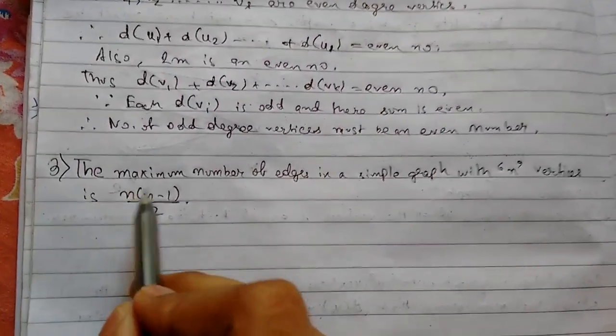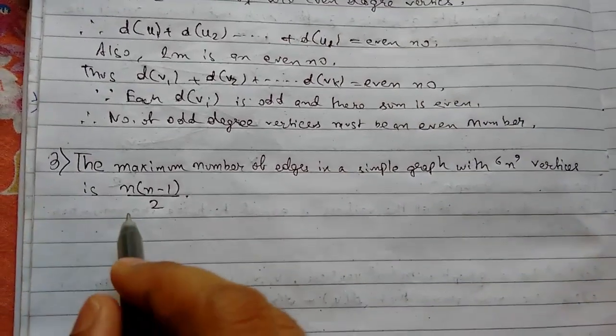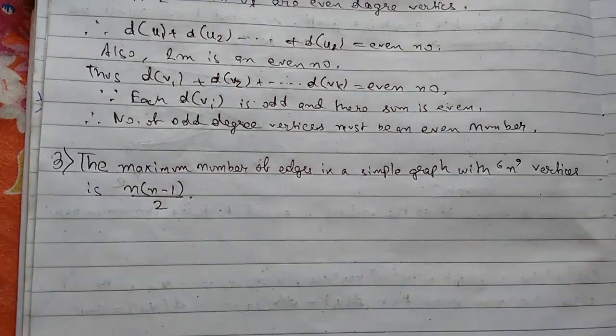The third theorem is: the maximum number of edges in a simple graph with n vertices is n(n-1)/2. So we need to prove it.